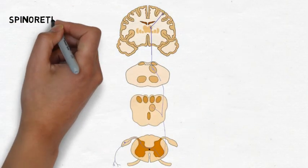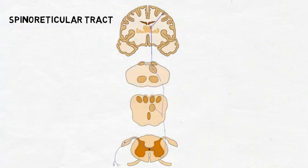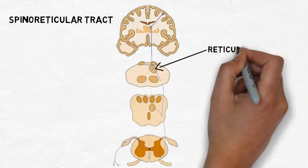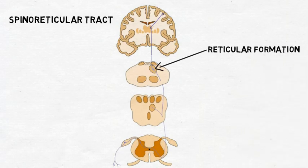The function of the spinoreticular tract is not very clearly defined, but it may be involved in changes in the level of attention in response to pain. The fibers of the spinoreticular tract follow the same path as the spinothalamic tract, but they also project to areas in the reticular formation, which is a network of neurons found throughout the brainstem that are involved in a wide range of functions, including attention and consciousness.